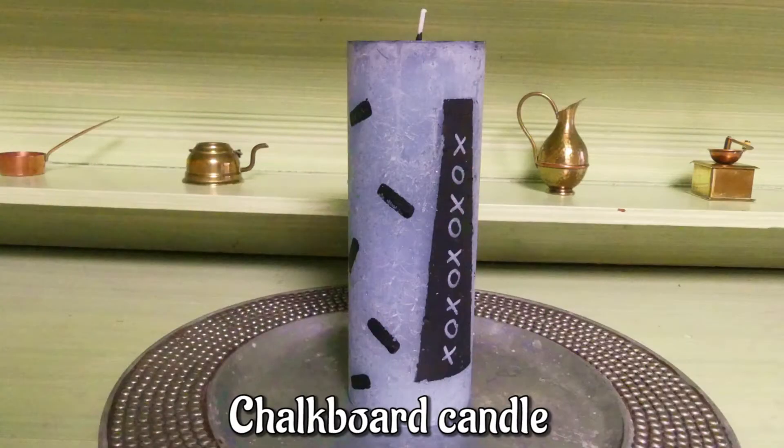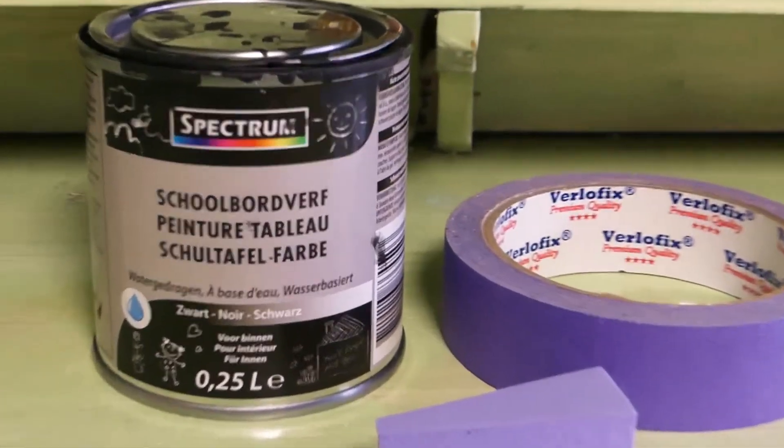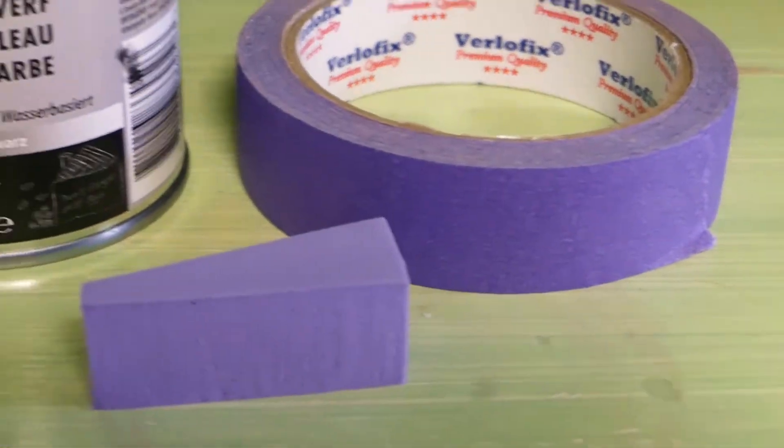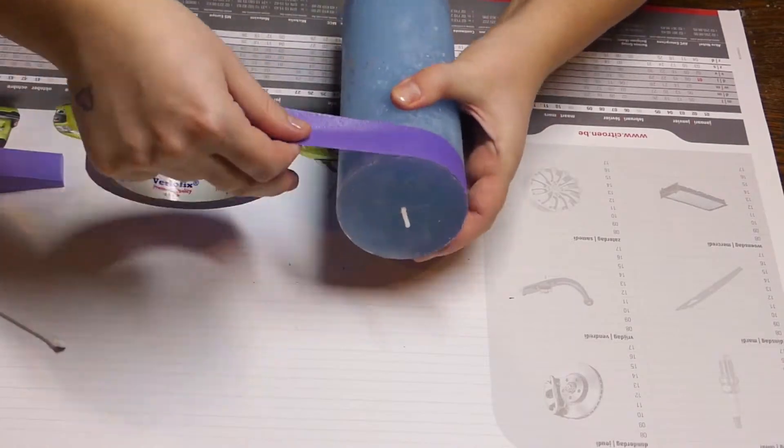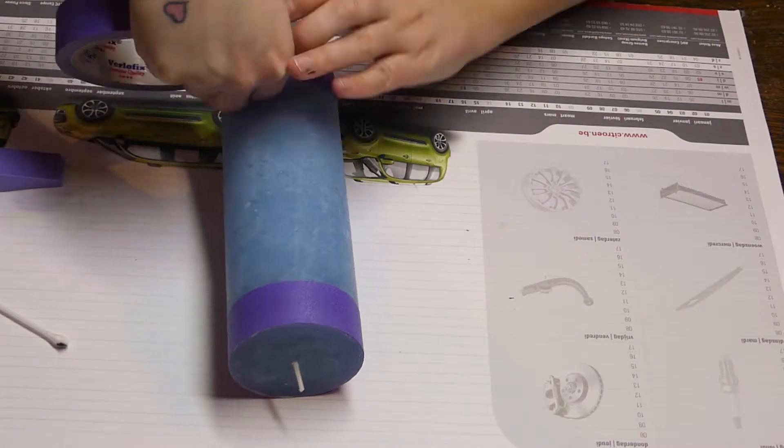The second candle we're going to make is a chalkboard candle. You'll need chalkboard paint, painter's tape and a makeup sponge or paint brush. Add some shapes to your candle with painter's tape. I'm going to add two geometrical shapes.